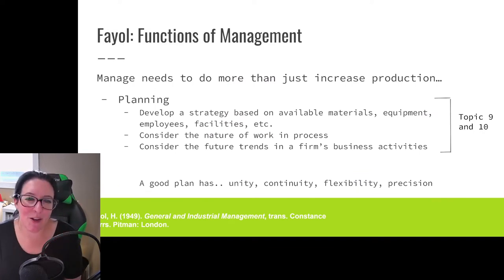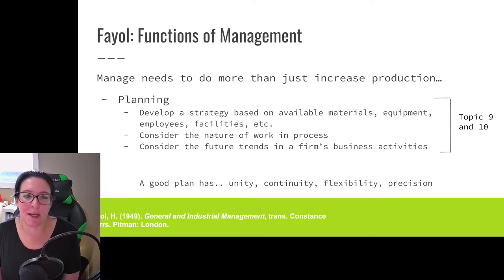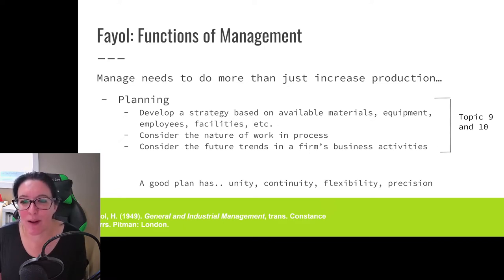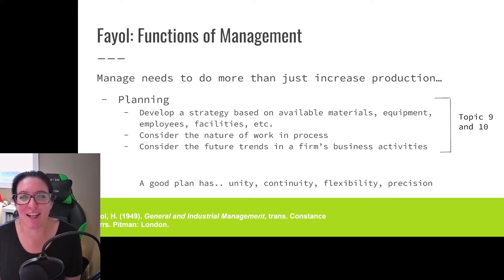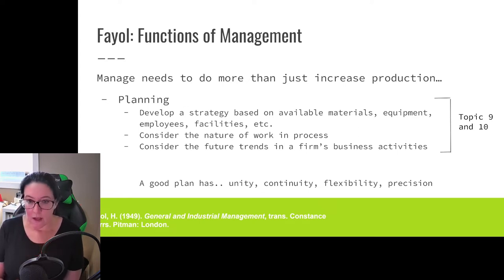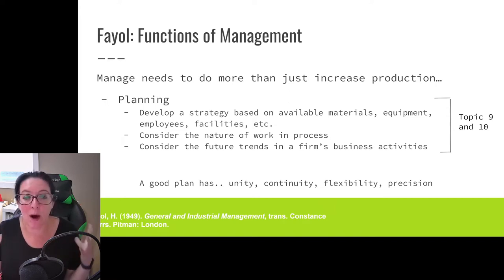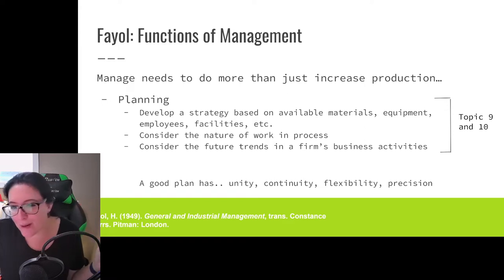The role of the manager is to plan — to develop a strategy based on the materials, equipment, people, and facilities that we have. What is it we're going to do? How are we going to be successful? The strategic planning process Fayol is talking about is what we use today. We need to consider future trends for our organization and our processes and external environments. A good plan, according to Fayol, is a plan that has unity — one plan, one strategy for the whole organization, so we don't have one department going one way and another going another.